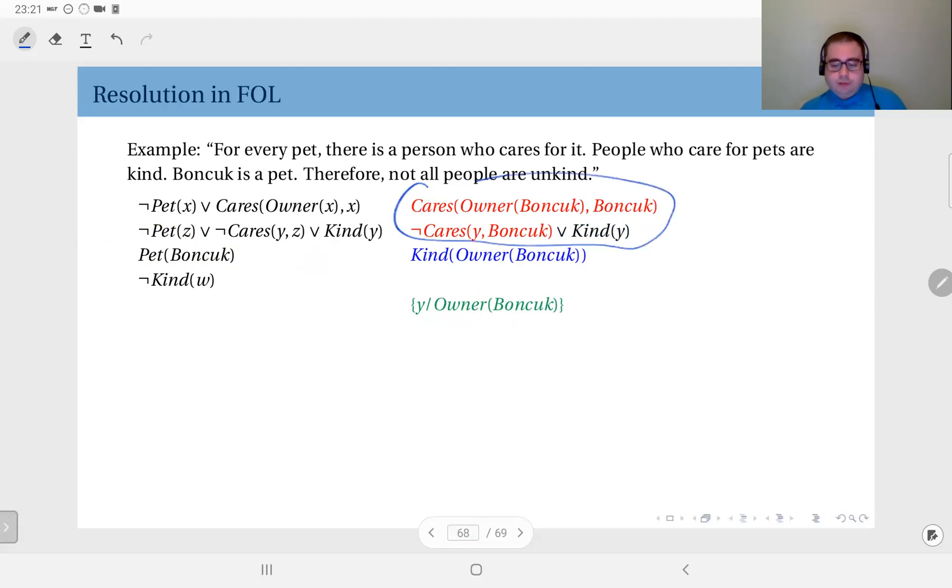These two—because you have Cares(something, something) and ¬Cares(something, something), and the Bonjuk values are already corresponding—what I need to unify these two is the substitution y → Owner(Bonjuk). They will disappear. What will remain is Kind(y), but remember y is replaced by Owner(Bonjuk), so that will be Kind(Owner(Bonjuk)). That will resolve with this one through the substitution w → Owner(Bonjuk). Therefore, what will remain is the empty clause, showing that the original argument was valid.